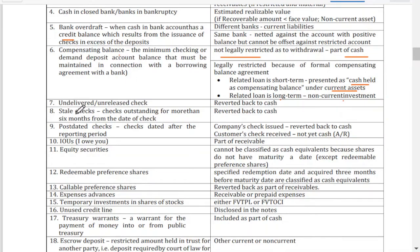We also have stale checks — checks that are outstanding for more than six months from the date of the check. A stale check is essentially an expired check that was not encashed. If we issued the check as payment but the payee did not encash it at the bank, technically no payment was made. So since the payment was unsuccessful, we revert the amount back to cash.